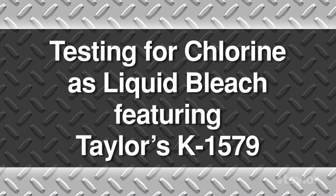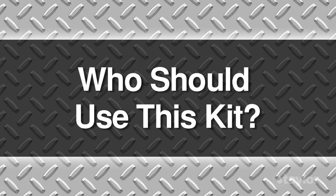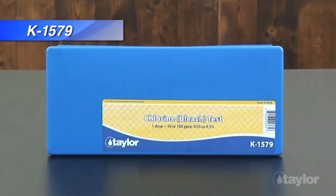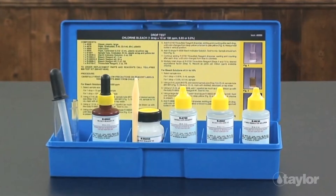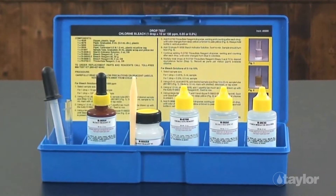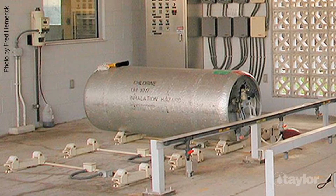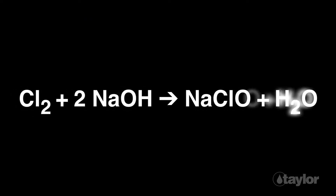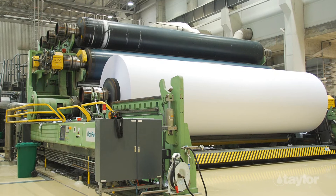Testing for chlorine as liquid bleach, featuring Taylor's K1579. Who should use this kit? Chlorine is a powerful oxidizer, sanitizer, and bleaching agent commonly used in commercial, industrial, and water utility operations. Chlorine treatment programs can be in the form of a gas, a dry formulation, or as a liquid. The liquid form is created by reacting chlorine with sodium hydroxide to produce sodium hypochlorite, or liquid bleach.